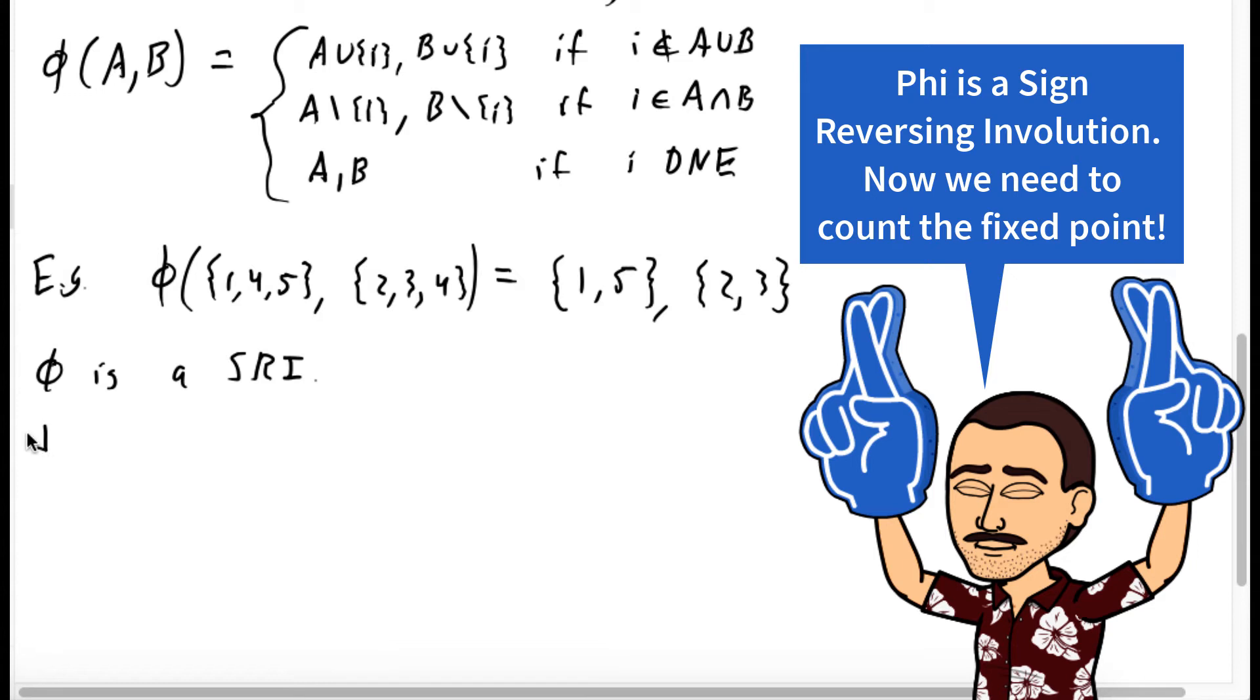Phi is a sign reversing involution. Notice if you applied phi twice, you'd get back to what you started. The fixed points of phi are all A and B such that A union B equals n and A intersect B is empty. That's the case where no i would exist.